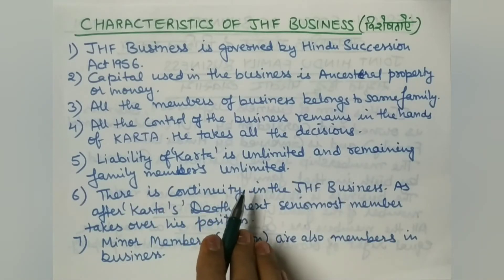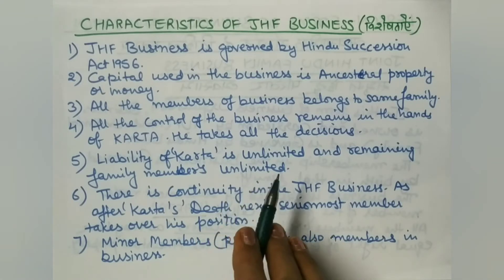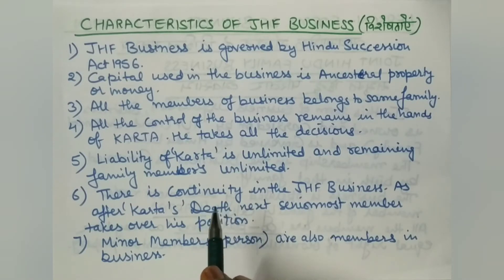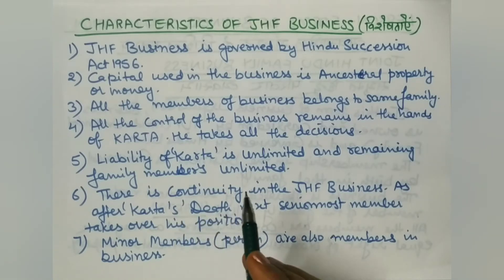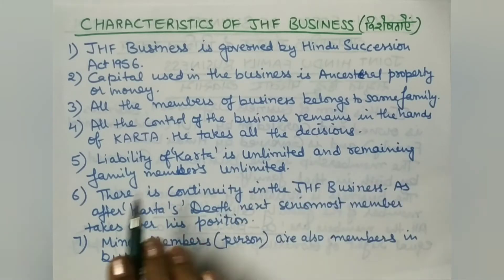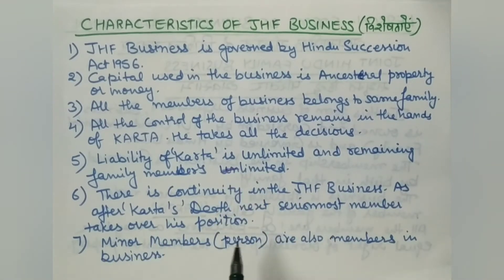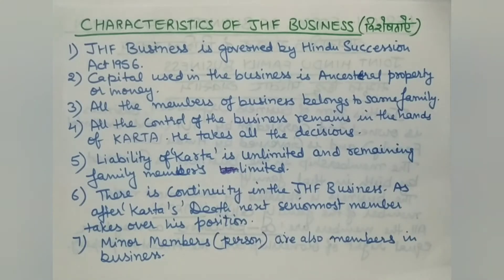The liability of the Karta is unlimited. Unlimited liability means that if the business has debts, the Karta's personal property can also be used to pay off those debts. However, the liability of the remaining family members is limited — they are only liable to the extent of their share in the ancestral property.